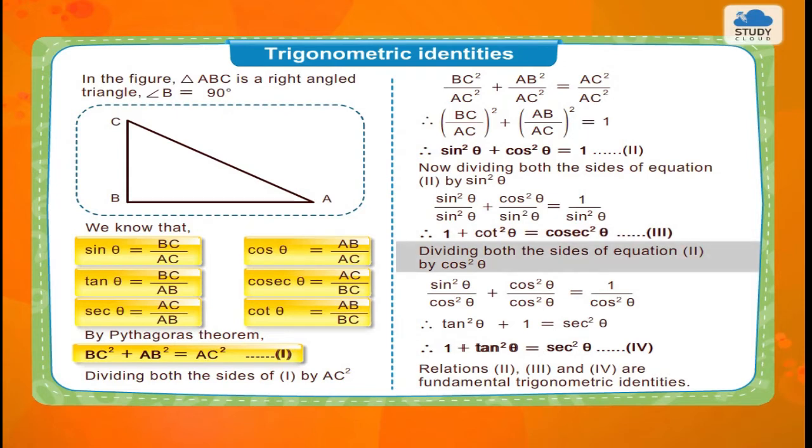Dividing both the sides of equation 2 by cos²θ, sin²θ upon cos²θ plus cos²θ upon cos²θ is equal to 1 upon cos²θ. Therefore, tan²θ plus 1 is equal to sec²θ. Therefore, 1 plus tan²θ is equal to sec²θ, equation 4.